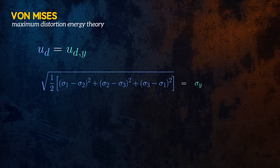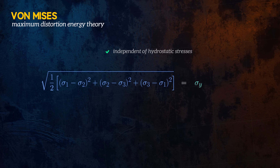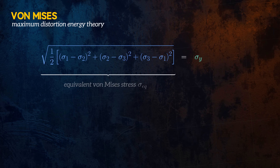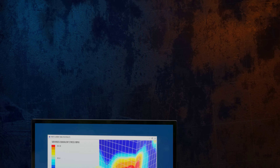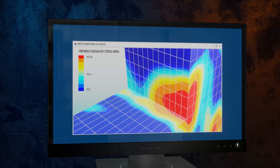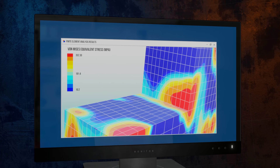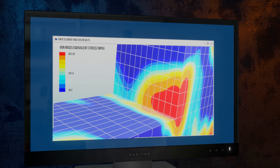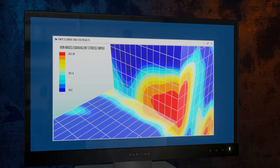We can see that this theory considers the difference between principal stresses and so is independent of the hydrostatic stress. The term on the left is often called the equivalent von Mises stress. If it is larger than the yield strength of the material, yielding is predicted to have occurred. The equivalent von Mises stress is a common output from stress analysis performed using the finite element method. Contour plots are typically generated to show the distribution of the von Mises equivalent stress within a component, allowing areas at risk of yielding to be identified.